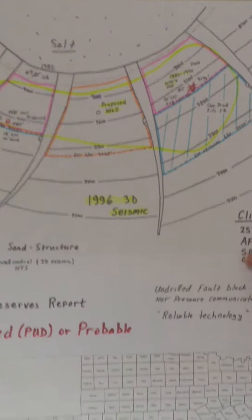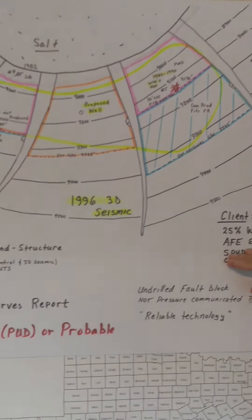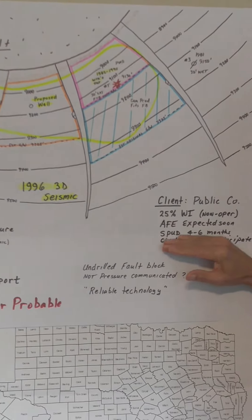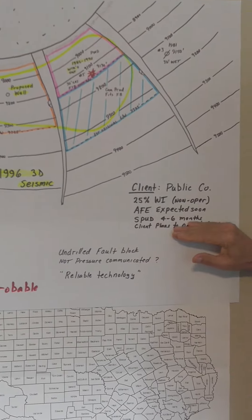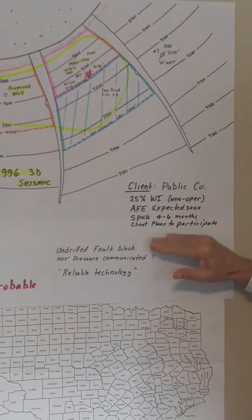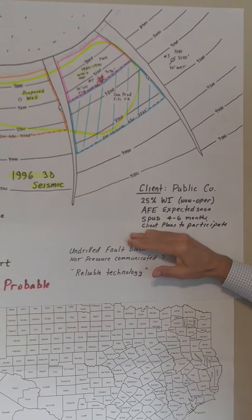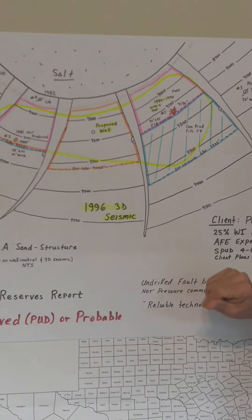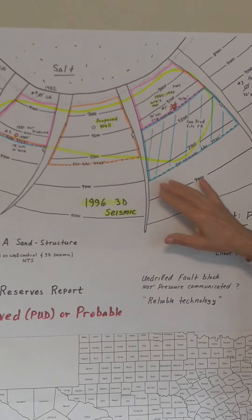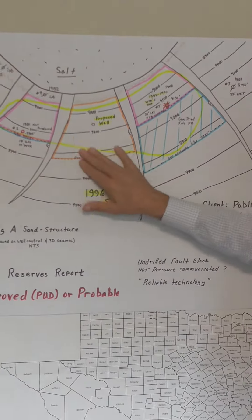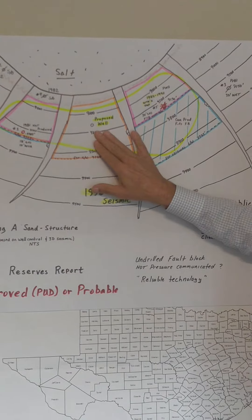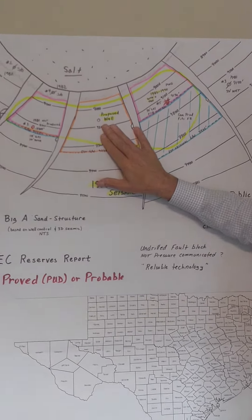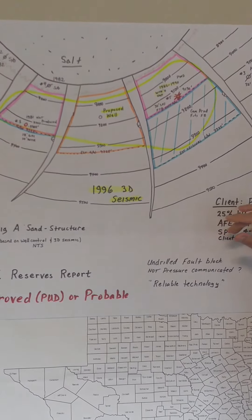The operator says they're working up the AFE, they plan to spud the well in 4 to 6 months, and my client wants to participate. The preliminary economics for this area shows that this would be a viable economic project.